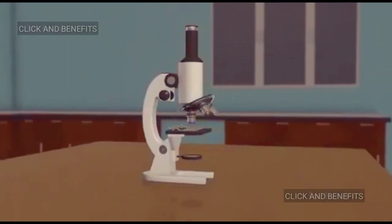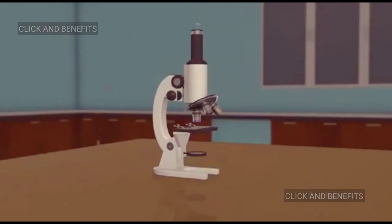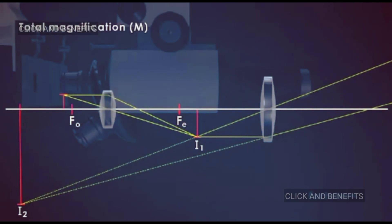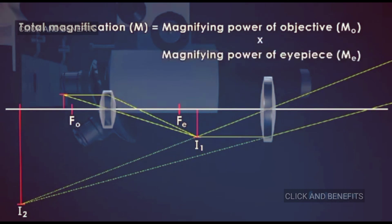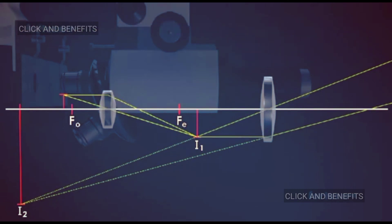Magnification of the compound microscope: The magnifying power of a lens is expressed in diameters. A lens magnifying an object five times has a magnification of five diameters and is written as 5x. The total magnification of a compound microscope is the product of the magnifying power of the objective and the magnifying power of the eyepiece.